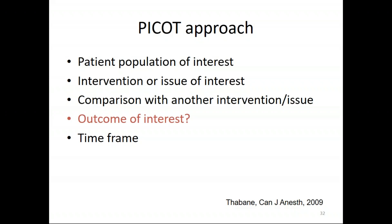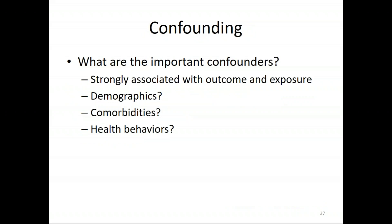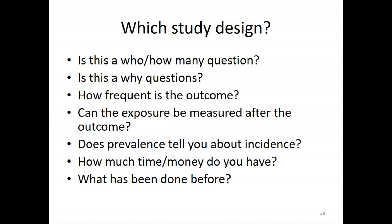Those are the sorts of questions to think about when developing your research question. Another thing to consider: what are the important confounders or potential biases in your study? Confounders are things strongly associated with both your outcome and your exposure, and not in the causal pathway. Key ones include demographics, comorbidities, and health behaviors. You'll rarely present results not adjusted at minimum for age and sex, and then anything else relevant — like the indication for a medication.